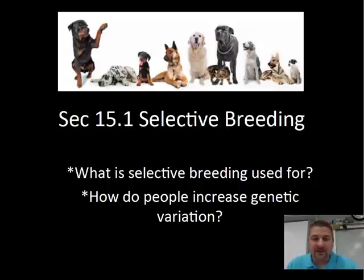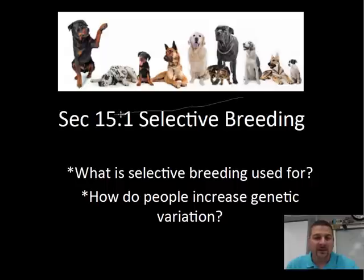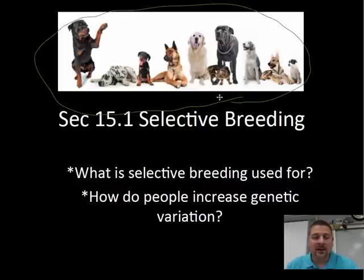So in the first section, chapter 15-1, we're looking at what selective breeding is used for and how do people increase genetic variation? How do we end up — like the picture of the dogs up here — with all these different kinds, sizes, and types of dogs? Looking at them, you might think they might be different species, when in actuality they're all the same species.